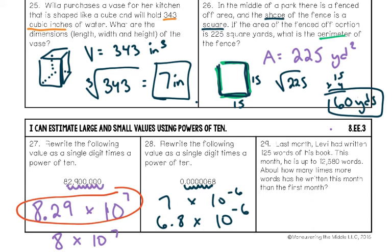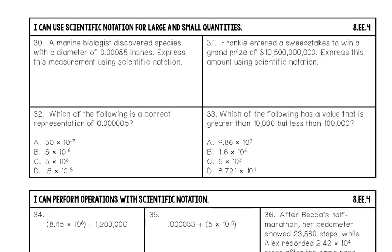Number twenty-nine: Levi wrote 125 words last month and about 12,580 words this month. How many times more words did he write this month? 'How many times more' means divide: 12,580 divided by 125 is about 100.64, so approximately 100 times more. In scientific notation that's about one times 10 squared.